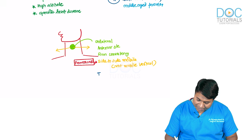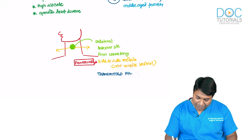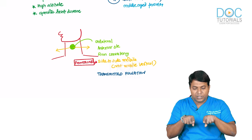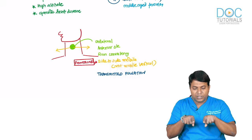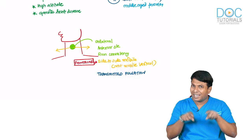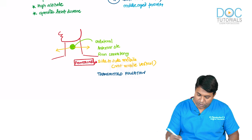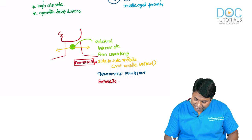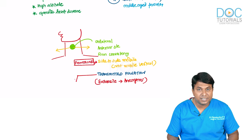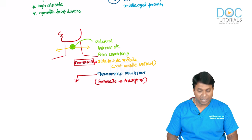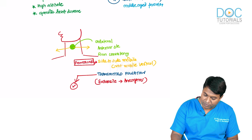Another important point: on examination, this swelling has a transmitted pulsation. The difference between transmitted and expansile pulsation is key — when you keep two fingers on the swelling and only the fingers are lifted, it is transmitted pulsation. If the fingers are lifted and separated, it is expansile pulsation. Expansile pulsation is seen only in aneurysms. Transmitted pulsation is seen in any swelling sitting on an artery.